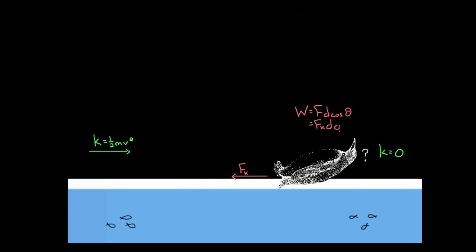This theta in cosine theta is always the angle between the force and the direction of motion. So this penguin's sliding to the right. The force is directed to the left. You might think that's zero, but that's not zero. The angle between leftward and rightward is not zero — that's actually 180 degrees.